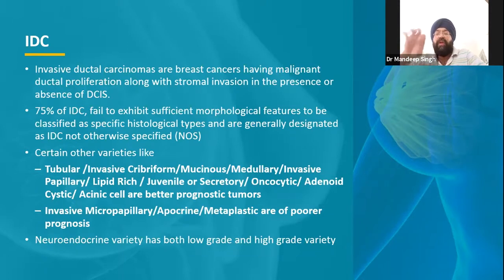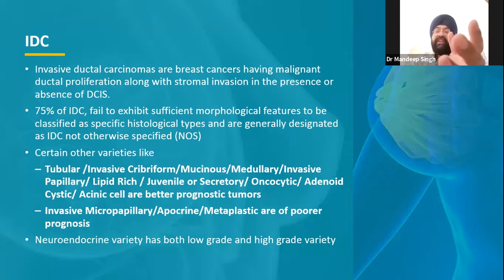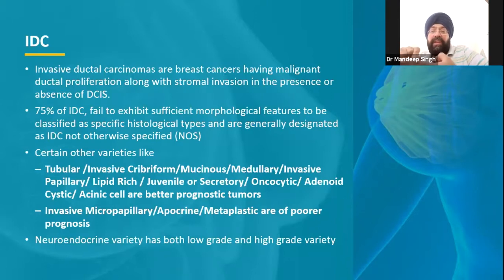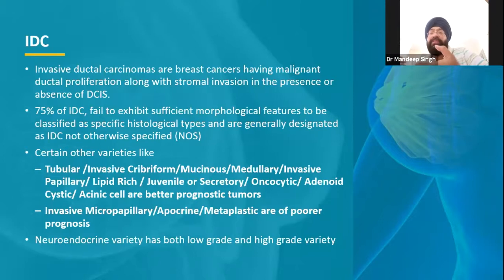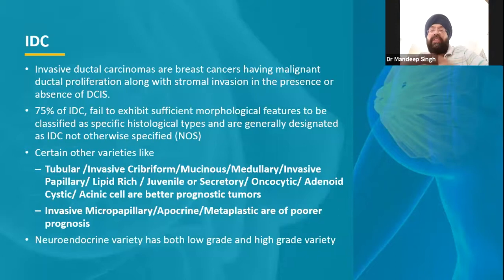The concept is that if something is well-formed, it is less aggressive; something without form is more aggressive. However, there are aggressive well-formed varieties too — macropapillary, apocrine. Metaplastic cancer is when ductal cancerous cells also start forming muscle cells or squamous epithelium cells, indicating a worse cancer than standard ductal cancer. There is also a neuroendocrine variety occurring in the breast, which can be low-grade or high-grade depending on how the pathologist grades it.